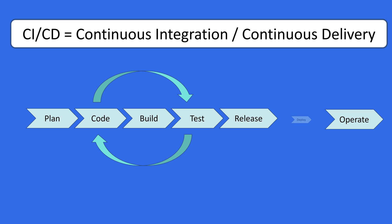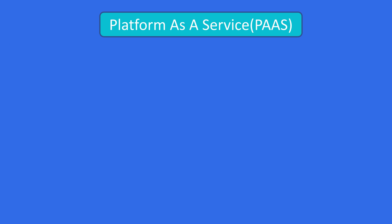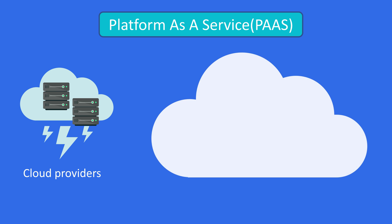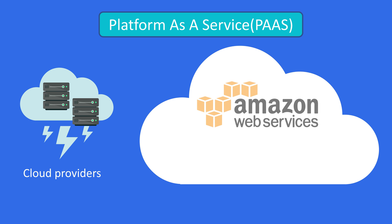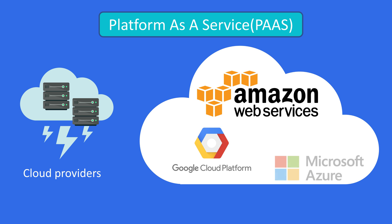CI/CD covers a host of DevOps tasks and responsibilities, and it is an infinite circle — your application will continuously receive new versions, new features, and bug fixes. Nowadays, many companies use cloud servers instead of creating their own physical infrastructure. This is called Infrastructure as a Service (IaaS) — like Amazon Web Services, Google Cloud Platform, and Microsoft Azure. It helps you minimize costs and supports services like load balancing, clustering, and security.